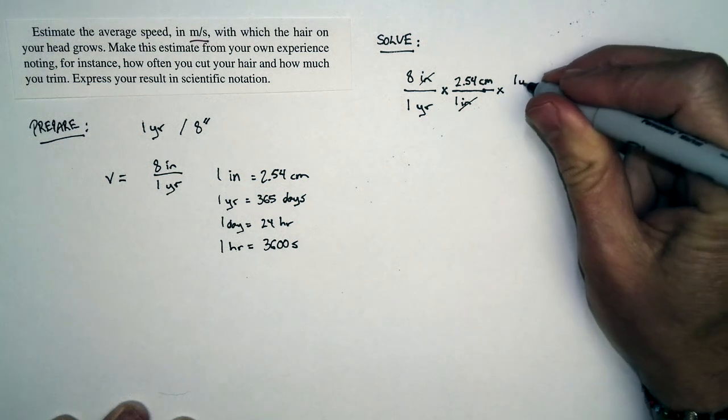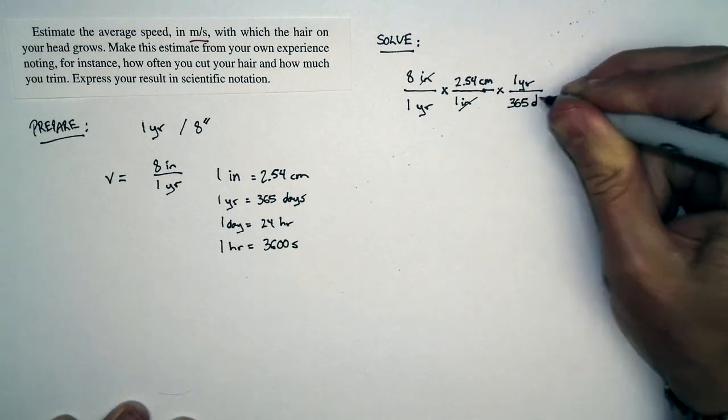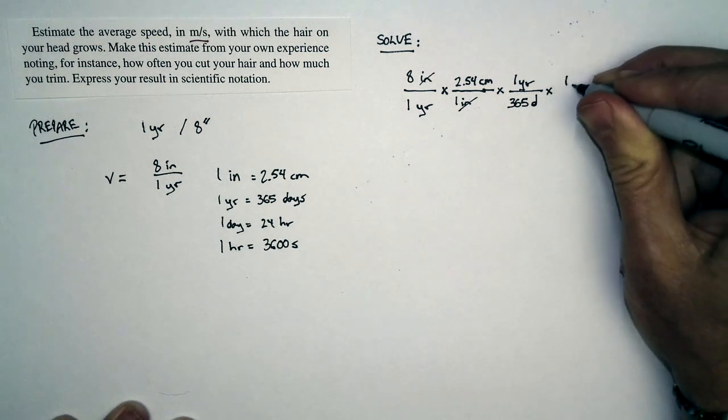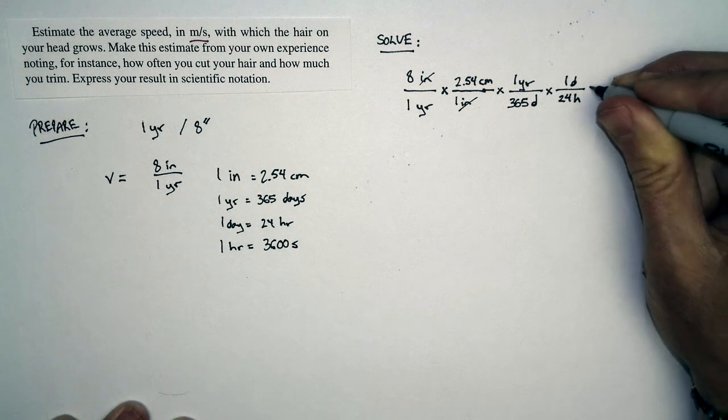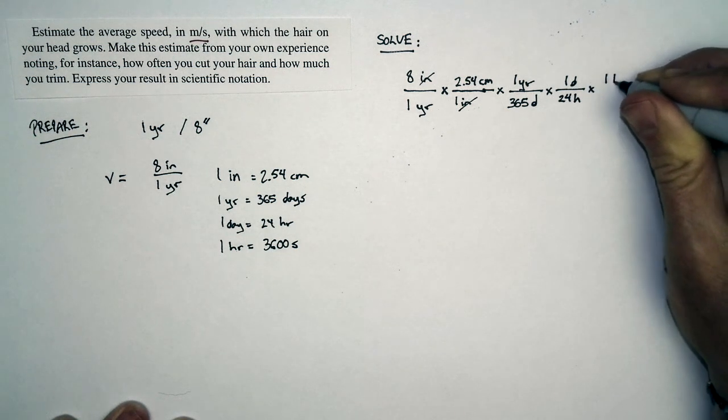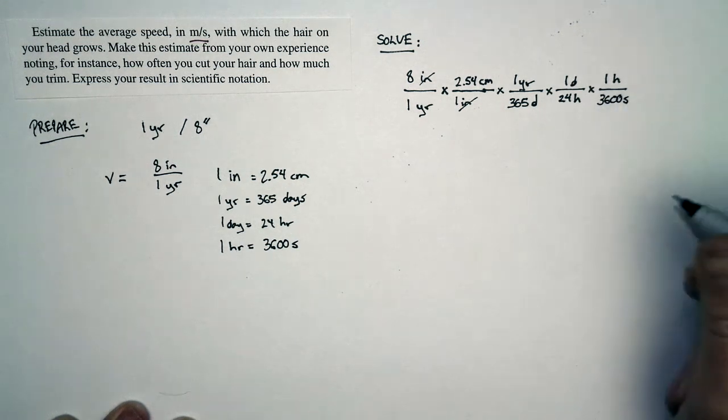One year, which I want to cancel, is equal to 365 days. One day is equal to 24 hours, and one hour is equal to 3,600 seconds.